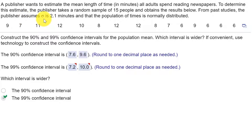the publisher assumes the population standard deviation, sigma, is 2.1 minutes, which is important, and that the population of times is normally distributed.